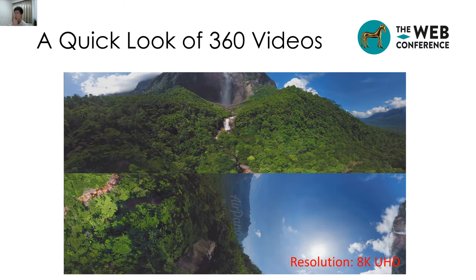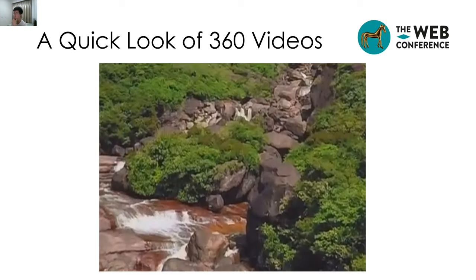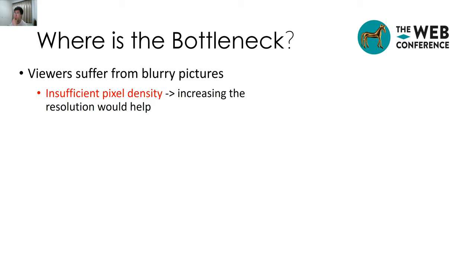Let's take a quick look at 360 videos. This is a full screenshot of a panoramic video in cube projection, the resolution of which is 8K — we also call this resolution ultra-high definition. When we look at the field of view a user can perceive, it's still high resolution, but this field of view contains both the eye focus and the peripheral vision. When we zoom into the eye focus, it's not high definition anymore. So where is the bottleneck? Viewers suffer from blurry pictures because of insufficient pixel density.